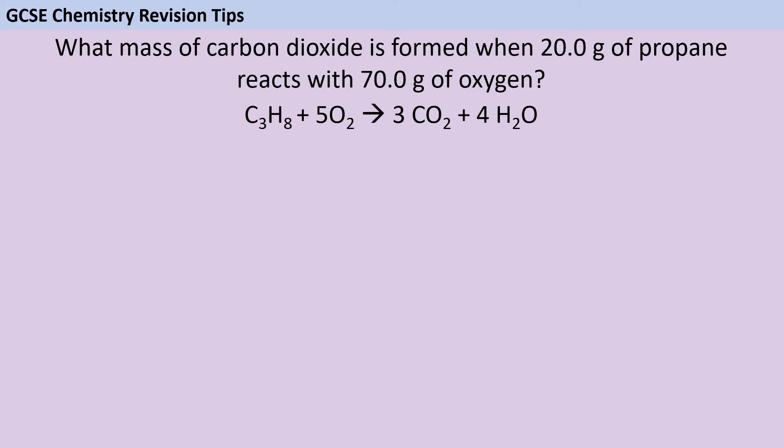For a question like this, the first thing I would be doing is familiarizing myself with the numbers and which chemicals they refer to. I cannot tell you the number of times I've looked at students' work and found that they've put the wrong mass with the wrong chemical or worked out moles of something that wasn't even in the calculation. So the first thing I would do is write down that there are 20 grams of propane and 70 grams of oxygen, and I don't know what carbon dioxide is—that's what I want to work out—and then just cross out the water so I don't try to use that instead.